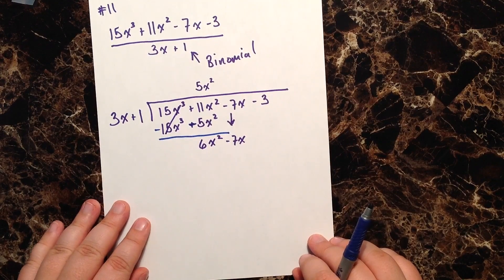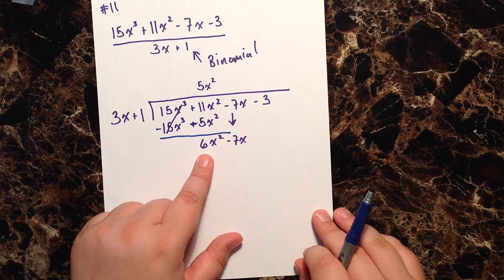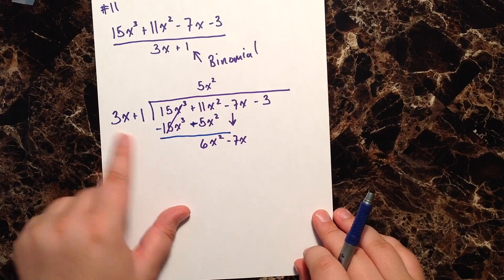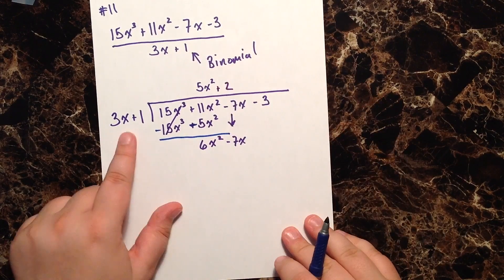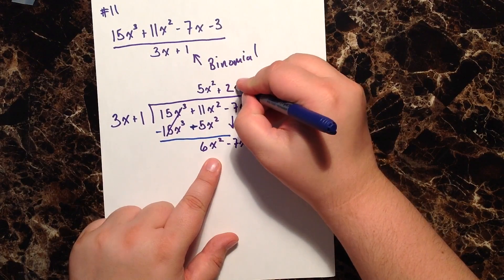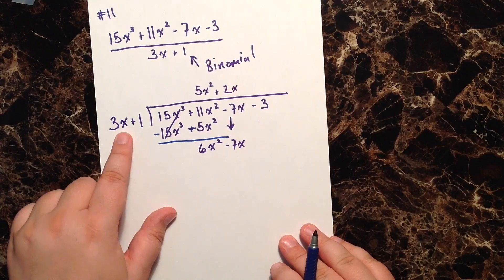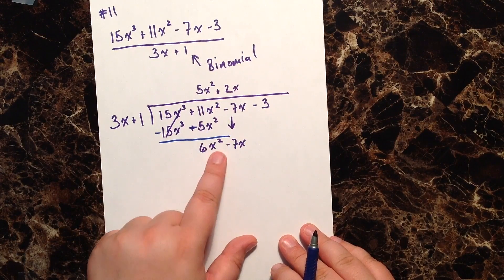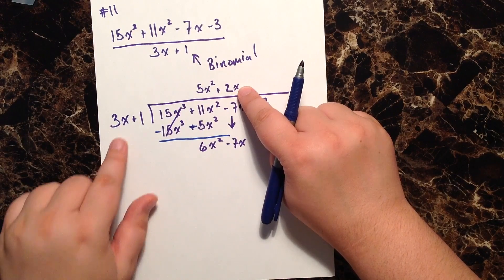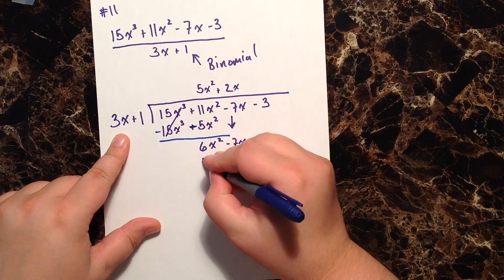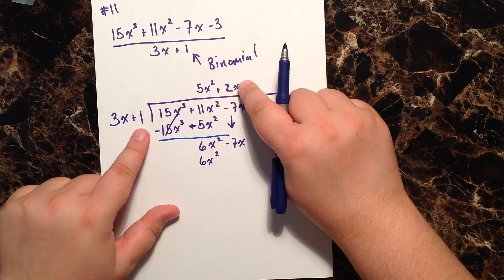So let's go ahead and show that. What do I have to do to 3x to get to 6x squared? Well I have to multiply 3 by 2 to get to 6, and I have to multiply x by x to get to x squared. So 3x times 2x gives me 6x squared.